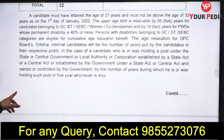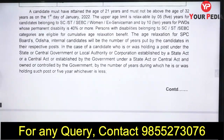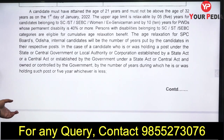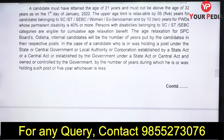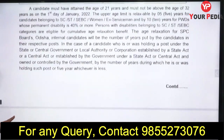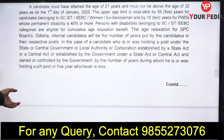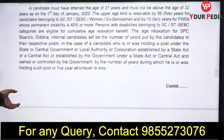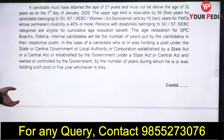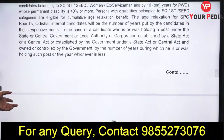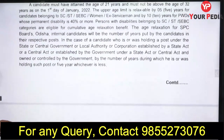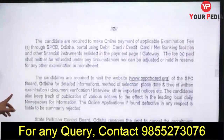Upper age limit 32 years है as on 1st January 2022. Persons with disability belonging to SC/ST and SC/BC categories are eligible for cumulative age relaxation benefit. SC/ST, BC, Women, और ESM को 5 साल की relaxation है, और PWD को 10 साल की relaxation है.